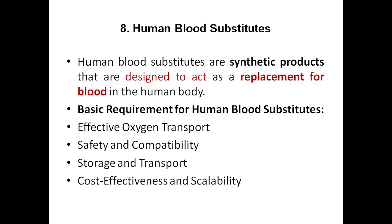What are the functions of normal blood? It will carry oxygen. In the blood we have RBCs, and in RBC we have something called hemoglobin. Hemoglobin is a protein that acts as a transporter — it takes oxygen and delivers it to every cell, every tissue, every organ of the body. So this particular synthetic blood also has to do that task.